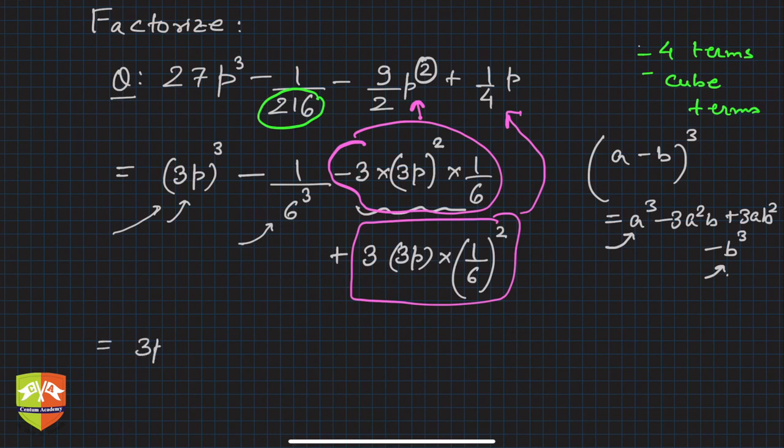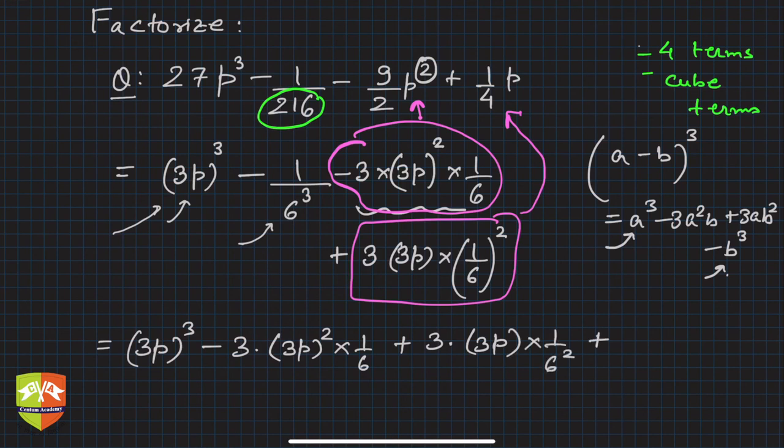So hence we are done, we got the expression. This is nothing but (3p)³ - 3(3p)² × (1/6) + 3 × 3p × (1/6)² - (1/6)³. Correct, so hence we got the expression like that.